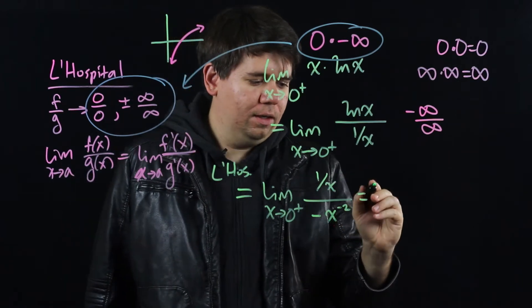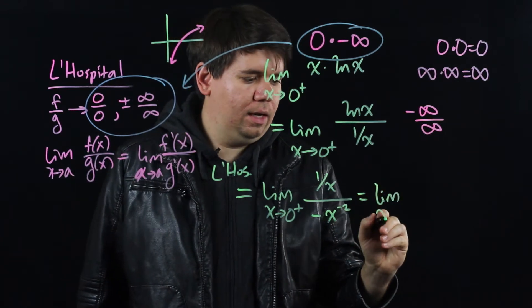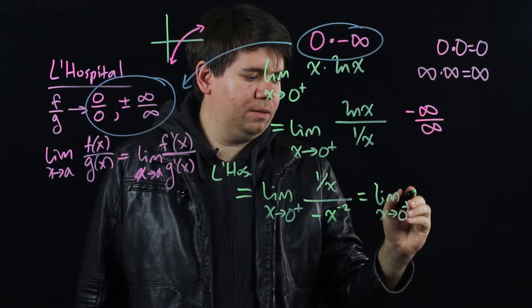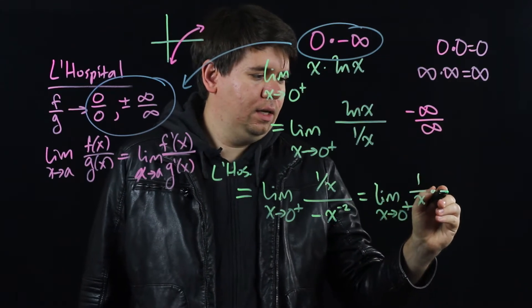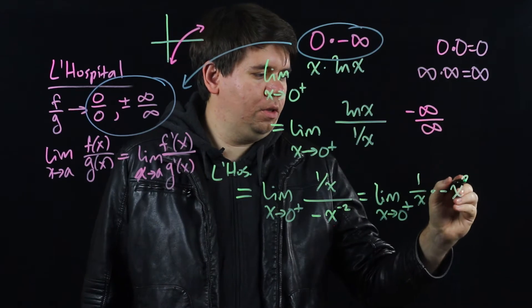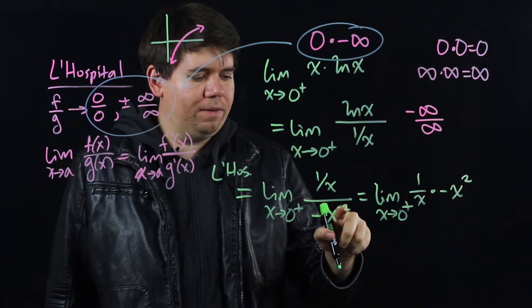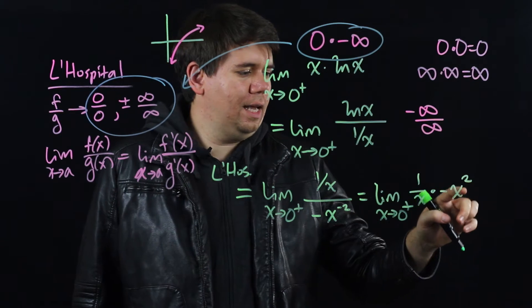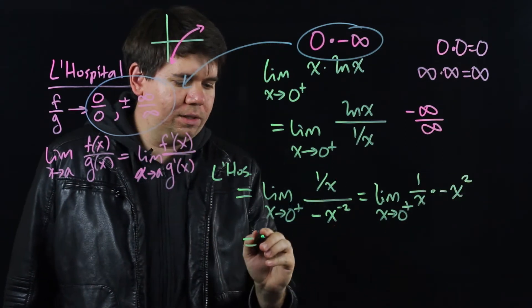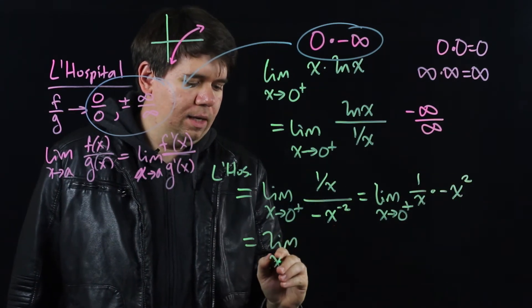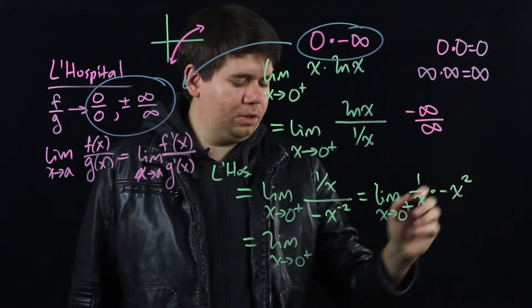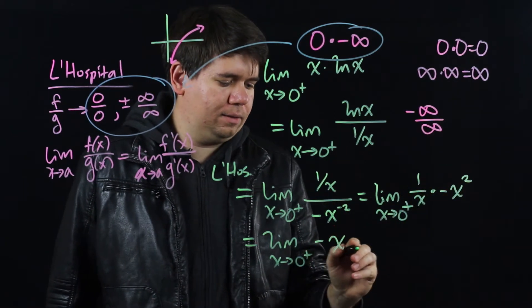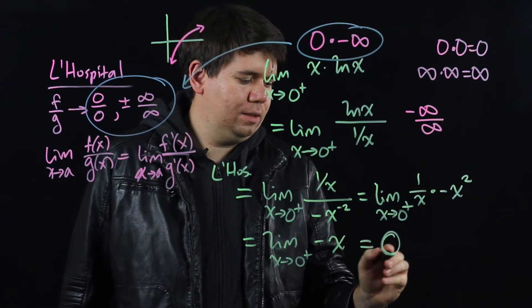Written another way, that's the limit as x goes to 0 from the right of 1 over x times negative x to the positive 2. This is a negative exponent below the fraction, so it comes up as x to the positive 2. Or simply, the limit as x goes to 0 from the right of 1 over x times x squared ends up being just a negative x, which is just 0.